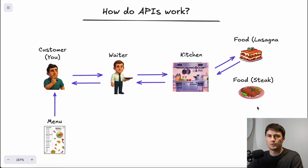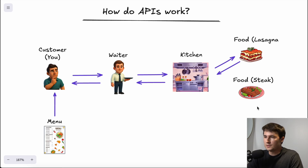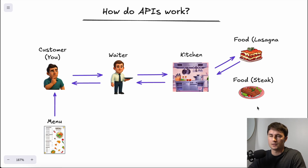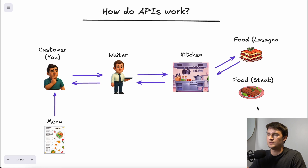How do APIs work? One of the best analogies is ordering a meal at a restaurant. There's the customer, which is you. You have the menu, which is the documentation that explains everything the restaurant offers. You have the waiter who takes your order and brings it to the kitchen. The kitchen then retrieves the food you want, gives it to the waiter, and the waiter brings it back to you.